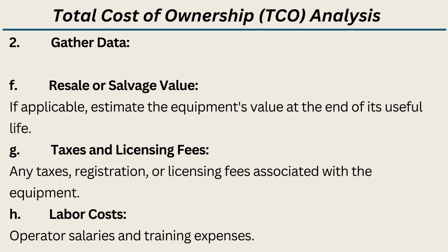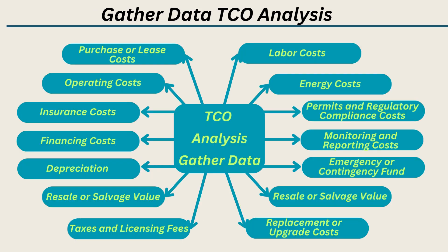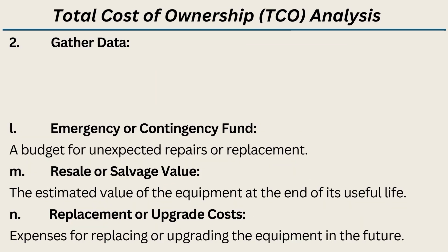H. Labor costs — operator's salaries and training expenses. I. Energy costs — electricity or other energy sources required for equipment operation. J. Permits and regulatory compliance costs — costs associated with obtaining and maintaining permits or complying with industry regulations. K. Monitoring and reporting costs — expenses related to tracking and managing the equipment's performance. L. Emergency or contingency fund — a budget for unexpected repairs or replacement.